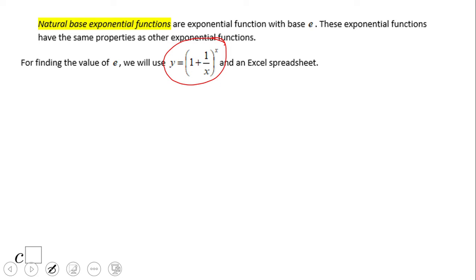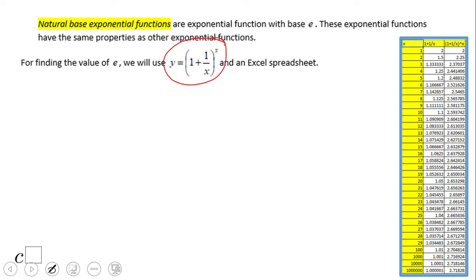You have a couple choices here. You can use an Excel spreadsheet, as you see here on the right with a bunch of numbers. I start from one and end up with one million. If you notice on this column, the value is getting closer and closer to a certain value, which is 2.71 - that is the value of e.